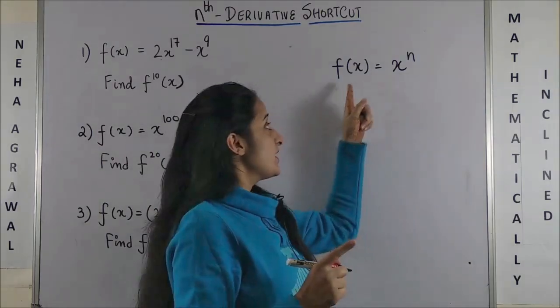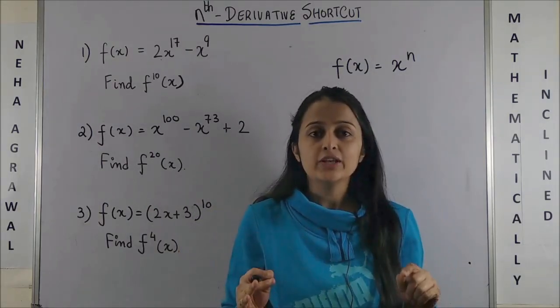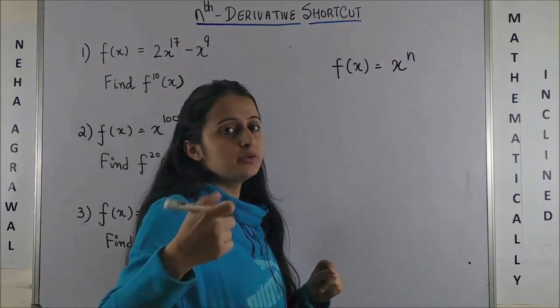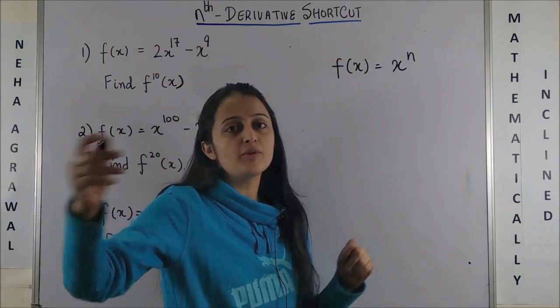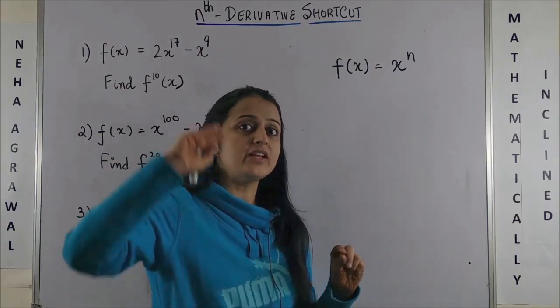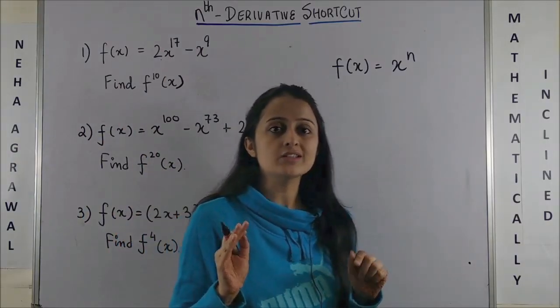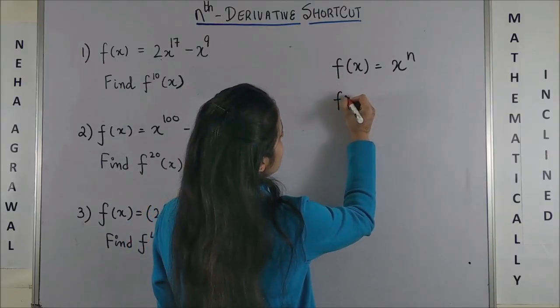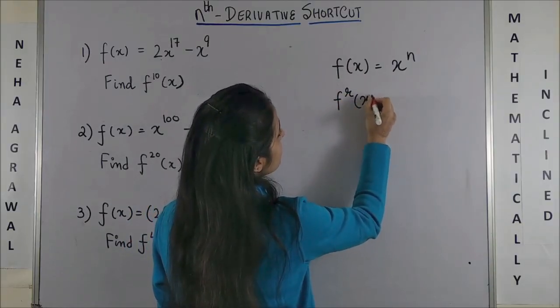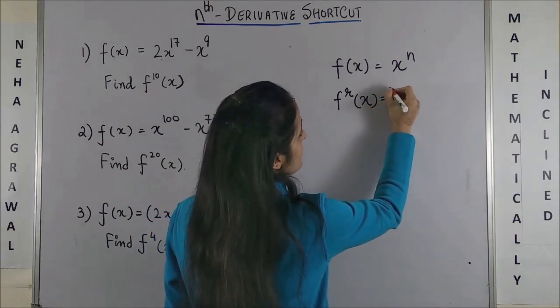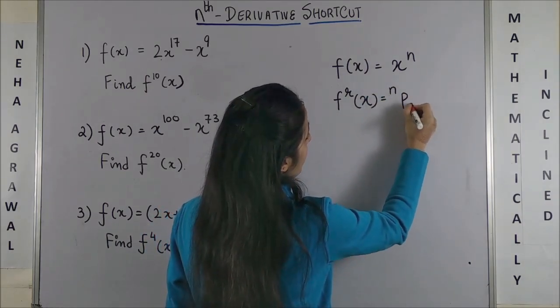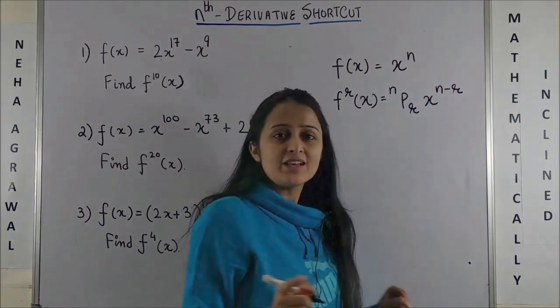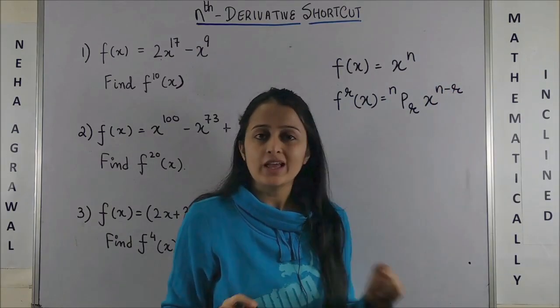Suppose you are given the function x raised to power n. In order to find its specific derivative, you can do it for one, two, three, four, but it is very difficult when a very higher order derivative is asked in the question. So here's a little formula. Suppose you have to find the rth derivative for this - the answer is simply nPr into x raised to power n minus r. Yes, you can try finding it with any number. This would be the answer.